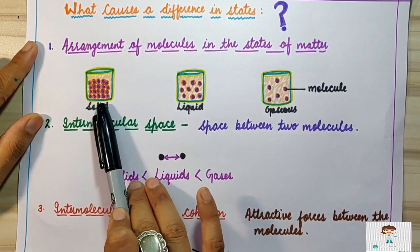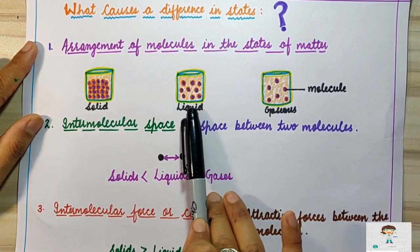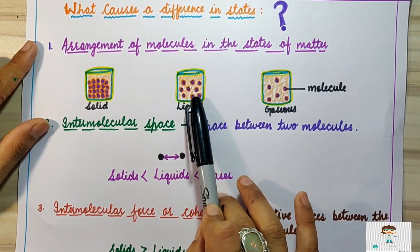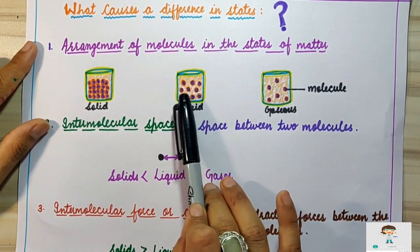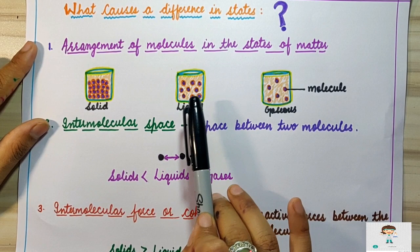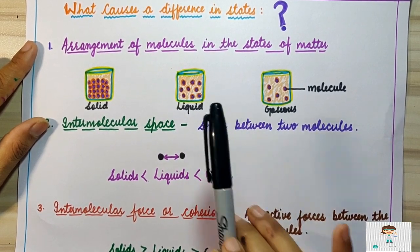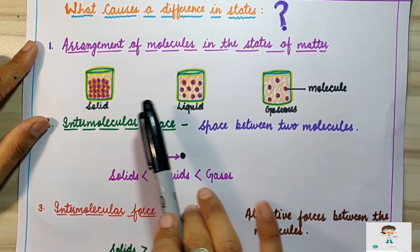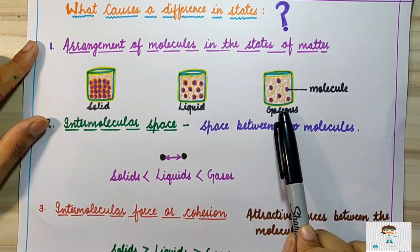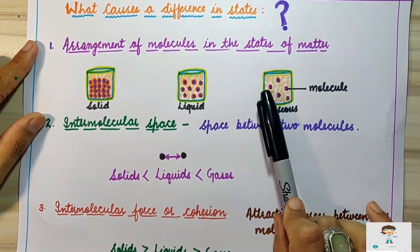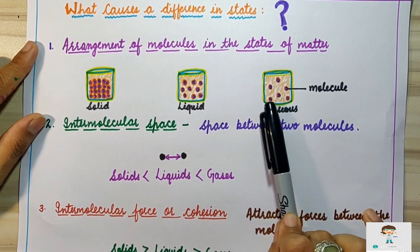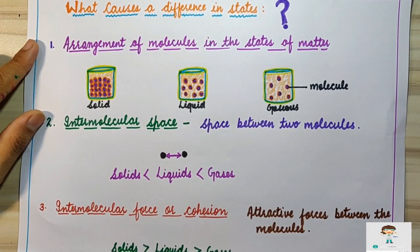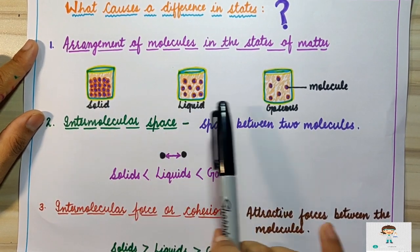In solid state, all particles are closely and tightly packed. In liquid state, particles are loosely packed with certain spaces between them; they can slip over one another, which is why liquids can flow. In gaseous state, particles are far away from each other and very loosely packed, so they can easily flow from one place to another.